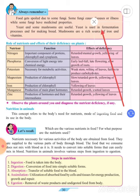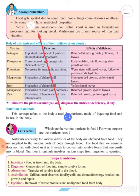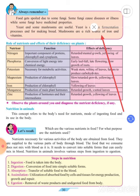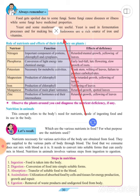Yeast is used in the fermentation process and for making bread. We have learned in previous year about the fermentation process. Mushrooms are a rich source of iron and vitamins.